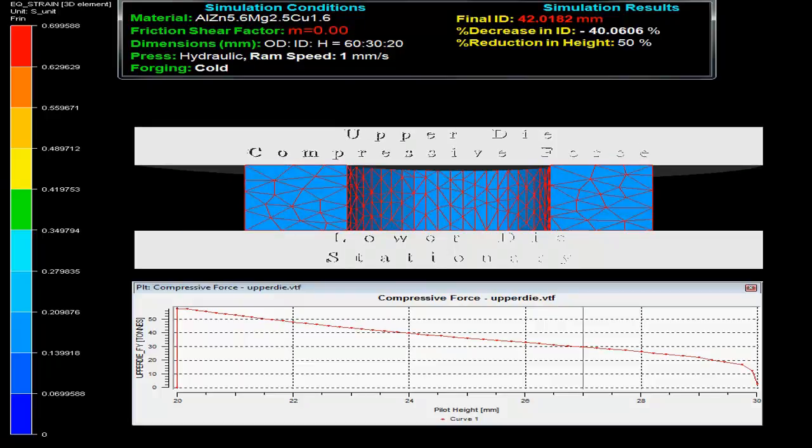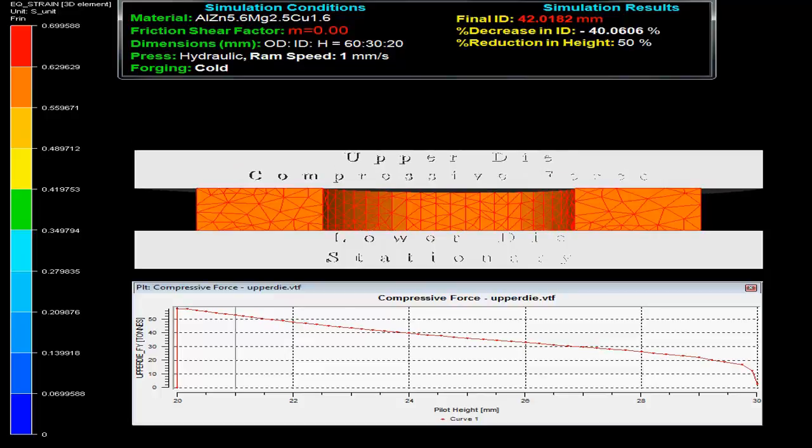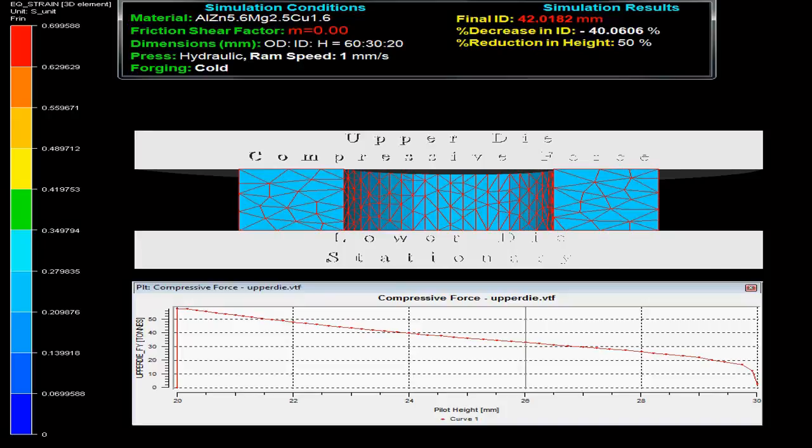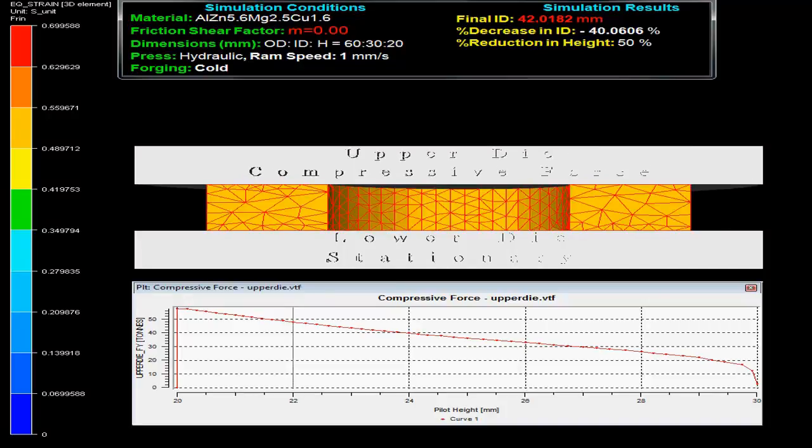At the bottom, the graph shows force on upper die versus pilot height. The equivalent strain generated during the process can be compared with the help of the scale given on the left side.